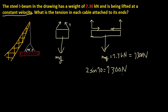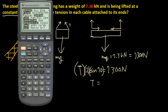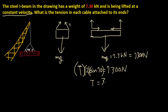We solve for tension T. Dividing both sides by 2 and by sine of 70: T = 7300 ÷ 2 ÷ sin(70°). Making sure the calculator is in degree mode — and that gives us our answer in newtons.